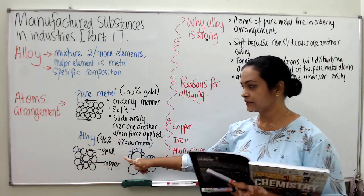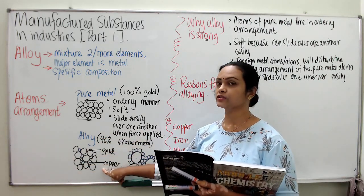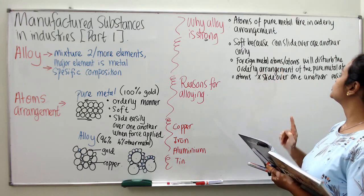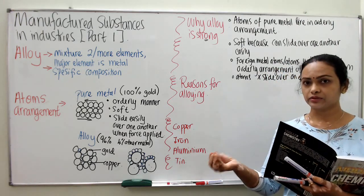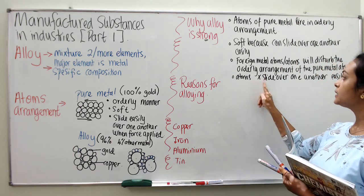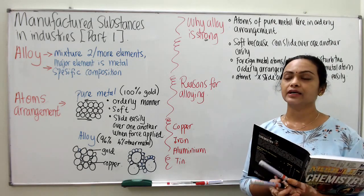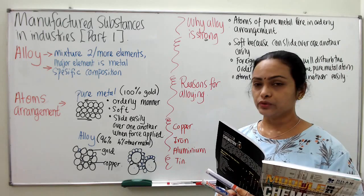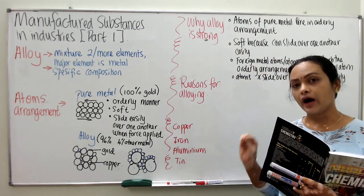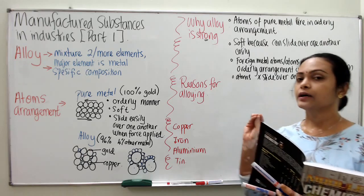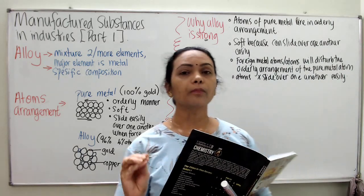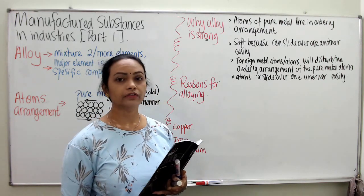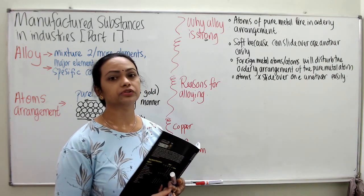When you add foreign atoms — say copper is added into gold, copper is the foreign metal atom — the foreign atoms will disturb the orderly arrangement of the pure metal atoms. So the atoms cannot slide over one another easily. This makes the alloy stronger than the pure metal. That is the key point you need to write if asked why alloy is stronger and harder compared to pure metal — this explanation is worth full marks for essay questions.